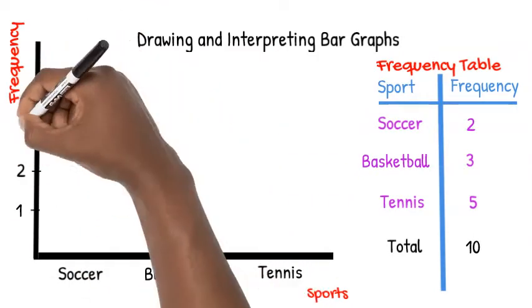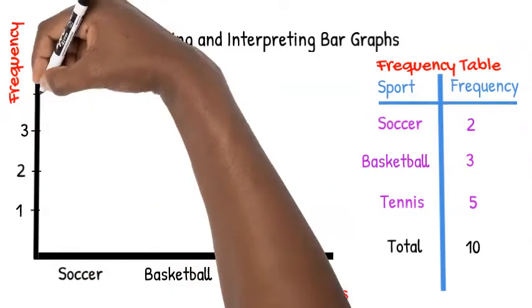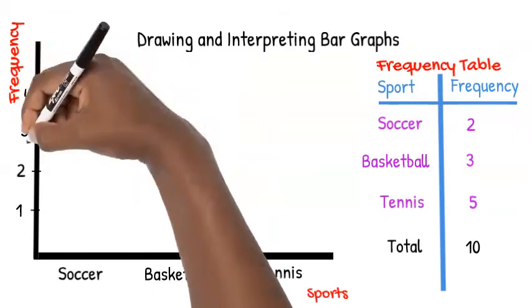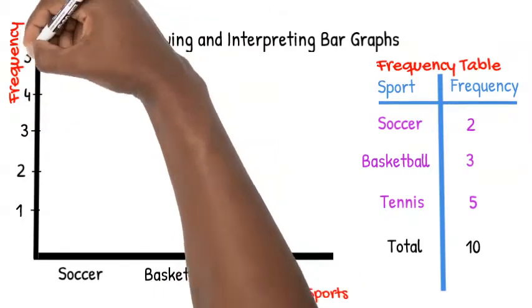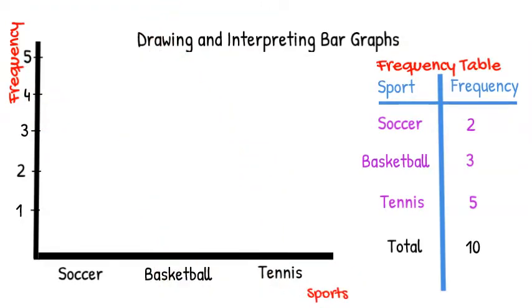Notice that we use a uniform scale. In this case, our numbers are going up by ones. If we weren't able to fit our highest number on the axis, we could choose to count by twos, threes, or something else.